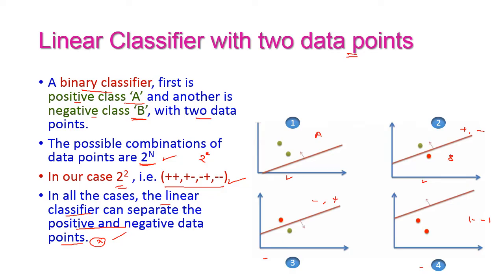The four combinations are: both positive; one positive and one negative; first is negative and second is positive; and both are negative. In all these cases, the linear classifier can separate the positive and negative data points without any conflict. The linear classifier line is drawn, and above the line are only the positive data points and below the line are the negative data points. We can easily classify with a linear classifier when the data points are only two.